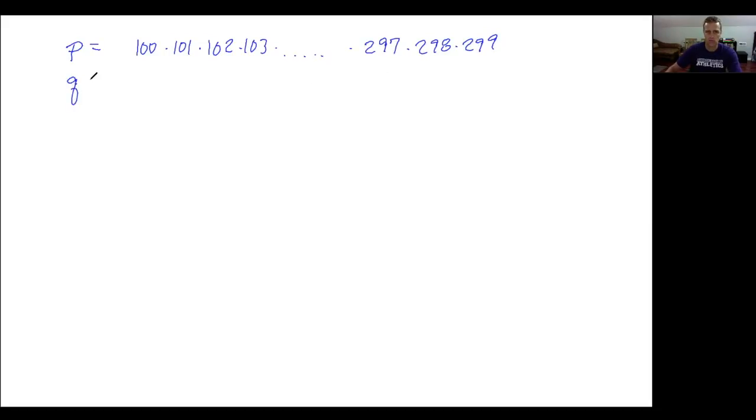And q is the same thing, except we're going to start at 200 instead, so we're going to have 200 times 201 times 202, et cetera, all the way up to 297, 298 times 299.